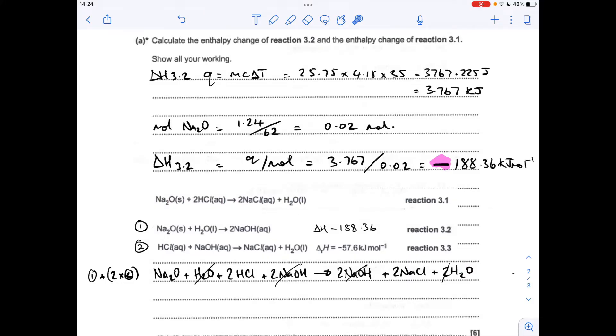So if by doing that to the equations gets us the equation we want, well we just need to do that with the enthalpy change values as well. So we're doing exactly that for the enthalpy change values now for the two reactions. We get minus 353.56 kJ per mole as the enthalpy change for reaction 3.1.